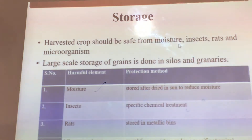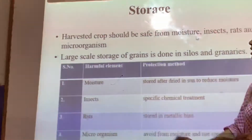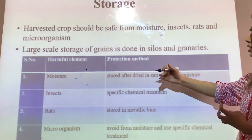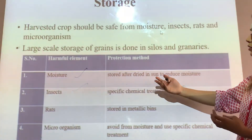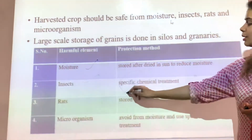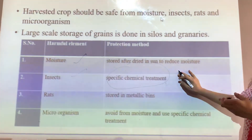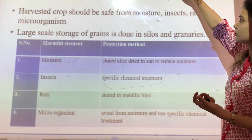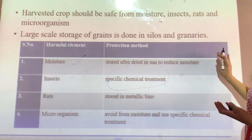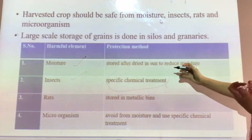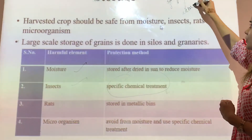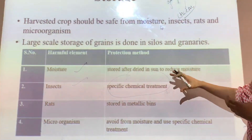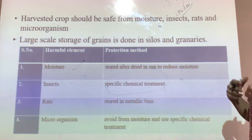The next harmful element is insects. There are many small insects and bacteria which can harm the crop — they can eat up the seed and the grain, making it bad quality and unable to germinate. So there are special chemical treatments we apply when storing crops in any garage or granary. Sometimes in villages, people also use neem leaves, placing them in sacks or granaries to keep insects and rodents away.